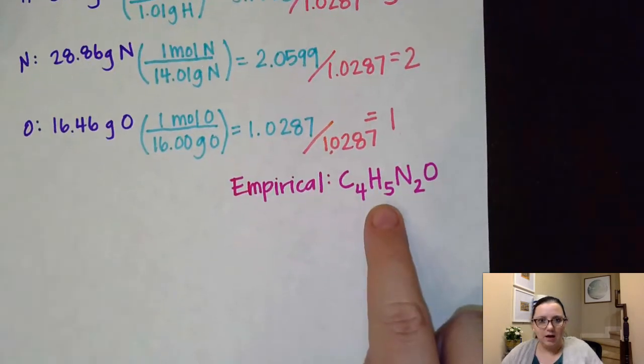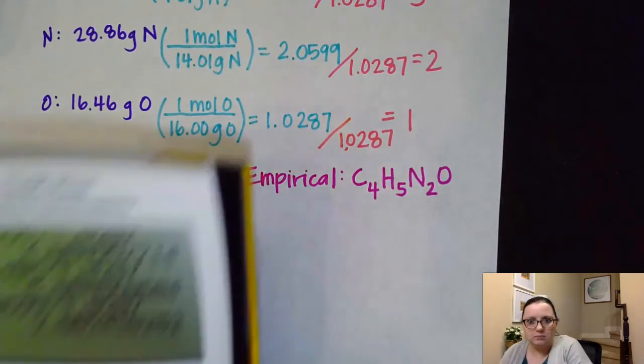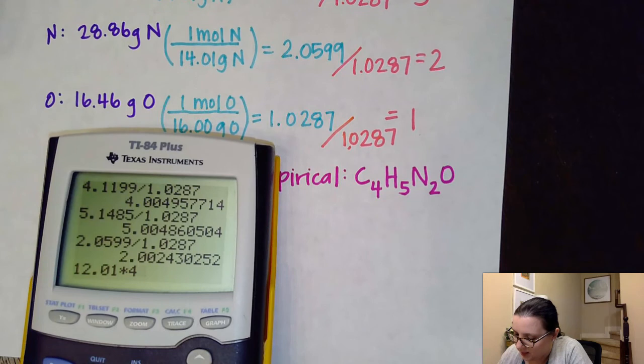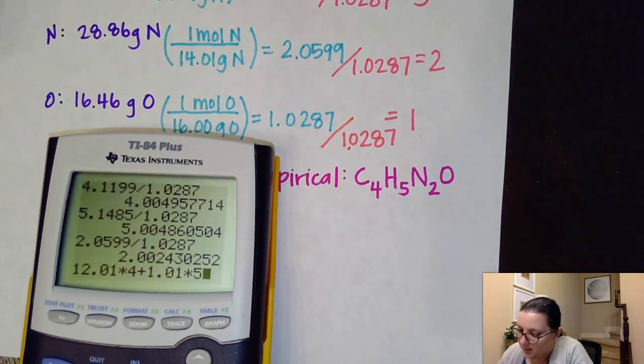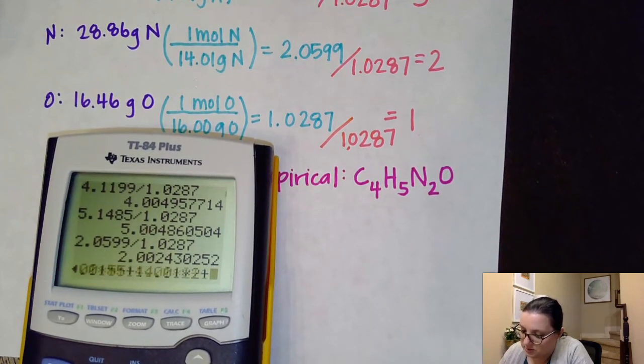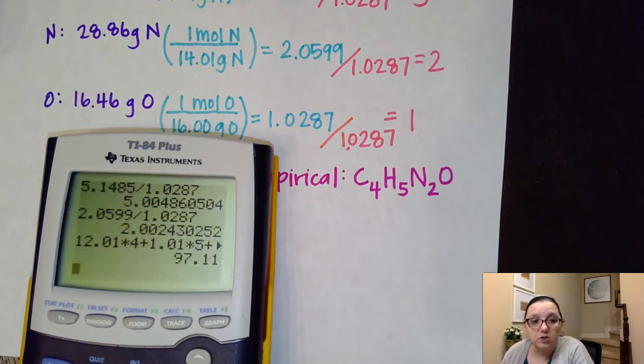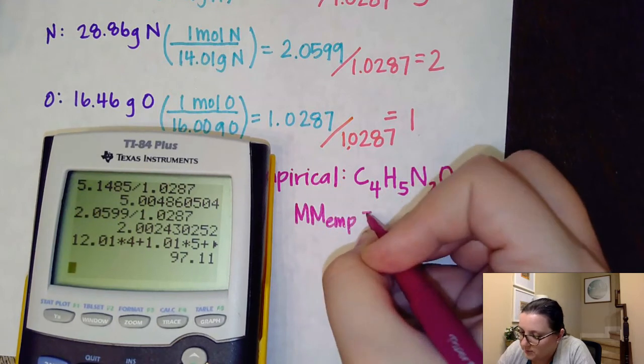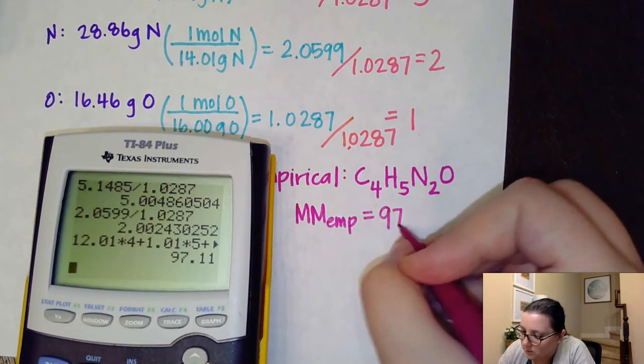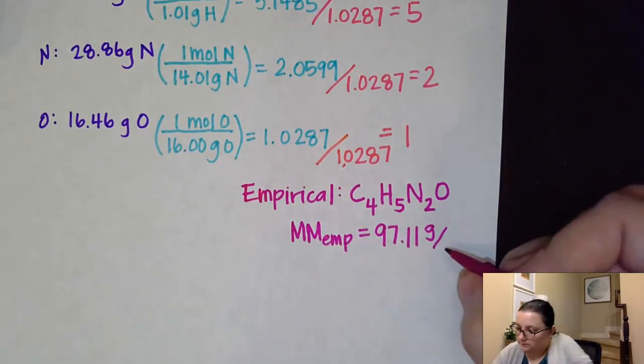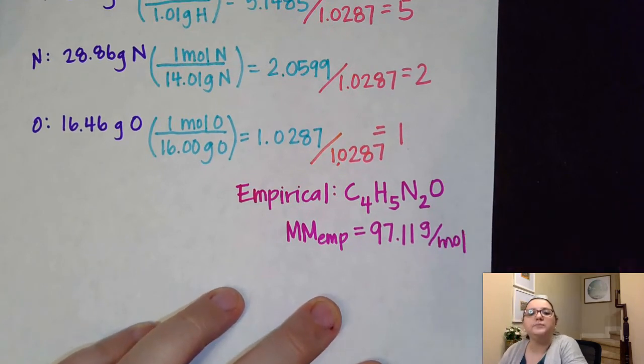So we want to find the molar mass of that empirical formula that we just solved. So what I would do is I would solve this guy's molar mass. So carbon's 12.01. I have 4 of that. I'm going to add that to hydrogen at 1.01, and there's 5 of it. I'm going to add that to nitrogen at 14.01, and there's 2 of that. And then I'm going to add that to oxygen at 16. And I find its total molar mass of the empirical to be 97.11 grams per mole.